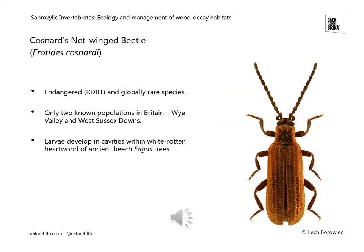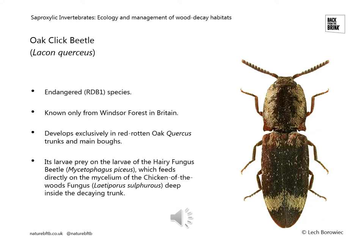Costnard's netwing beetle is one example of a species associated with heartwood decay. It is an endangered species within Britain and considered globally rare, known from only two populations — one in Mumbai Valley and another on the west of six towns. Its larvae develop within cavities in white-rotted heartwood of ancient beech trees. Another example is the oak click beetle, an endangered species known in Britain only from Windsor Forest, which develops exclusively in the trunks and main boughs of oak trees infested with red rot. Its larvae are predatory on the larvae of the hairy fungus beetle, which feeds on the mycelium of the chicken of the woods fungus — so it's a species dependent upon another species that feeds on fungi.